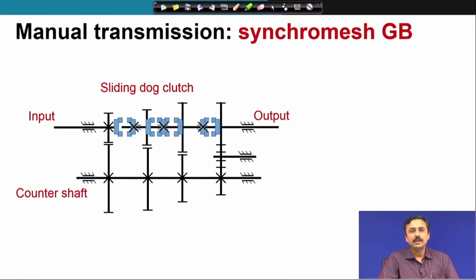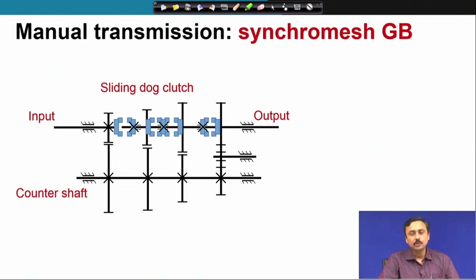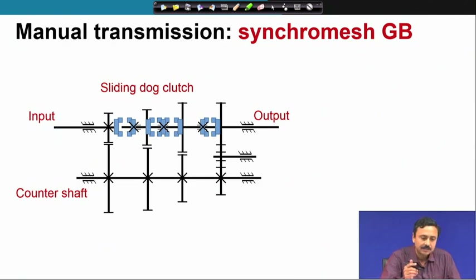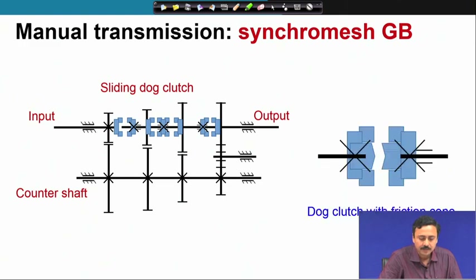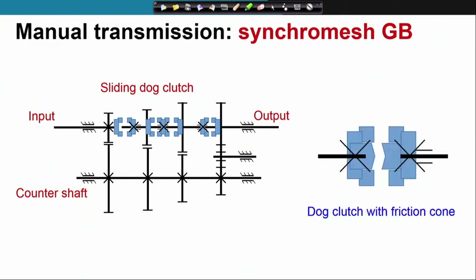Next, we are going to look at the synchromesh gearbox. The idea is very similar to the continuous mesh gearbox, except that the dog clutch is slightly more sophisticated. This dog clutch also has a friction cone — a friction clutch.